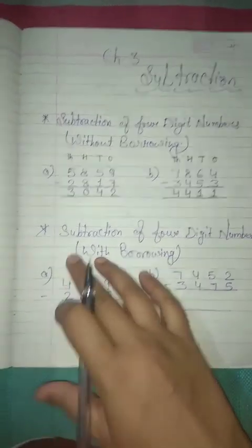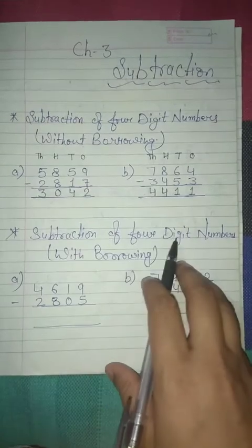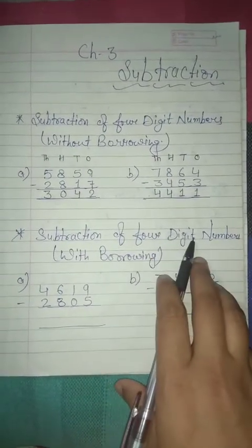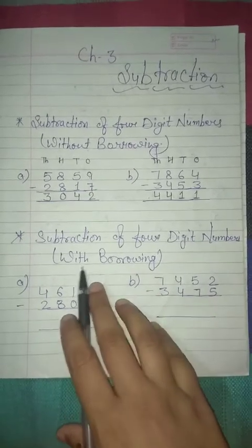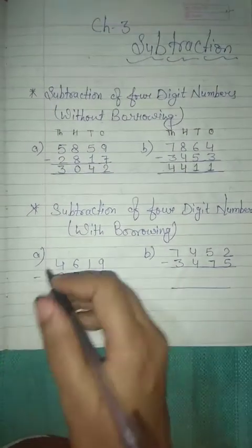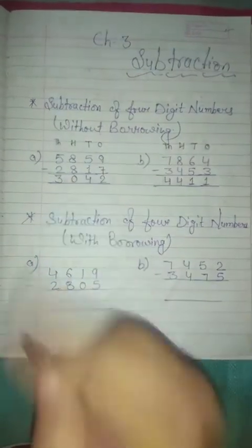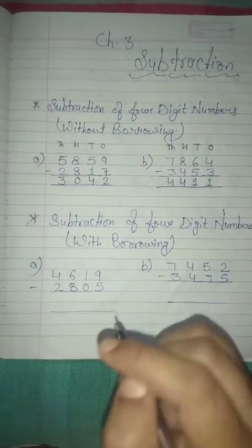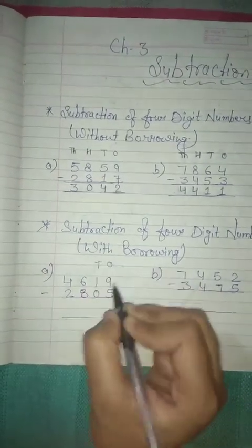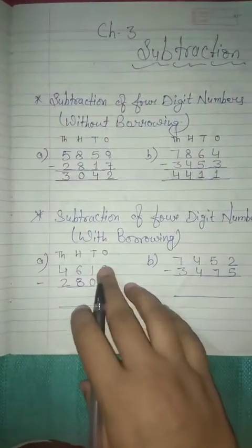Then go to your next part. The next topic is subtraction of 4-digit numbers with borrowing. Again, 4-digit numbers, but with borrowing. So how to borrow? Let's check. Look at here — here are some numbers. So firstly write down the places: ones, tens, hundreds, then thousands. Very good.